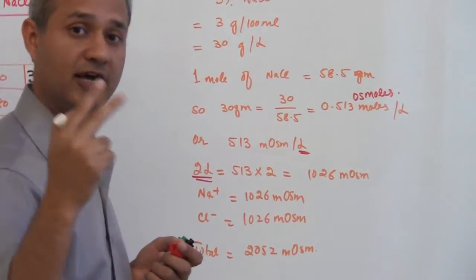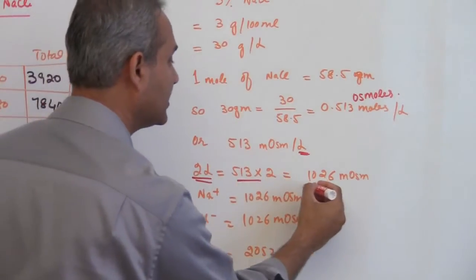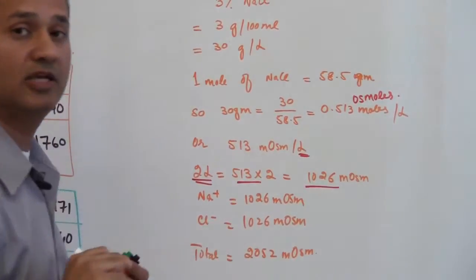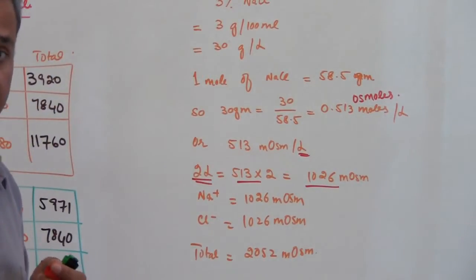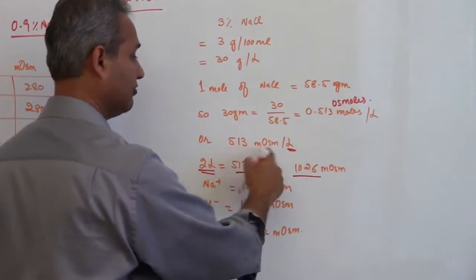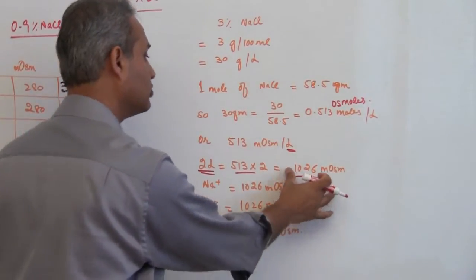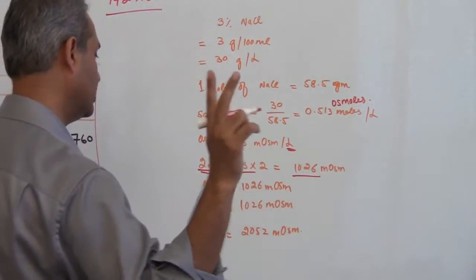We have 0.513 moles per liter and 2 liters, so we multiply it with 2 and get 1026 milliosmoles for 2 liters. Osmolarity is still 513 milliosmoles per liter, but this is now the total milliosmoles present in 2 liters.